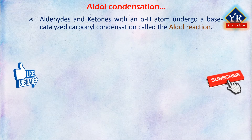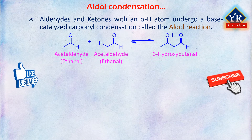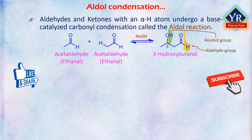Thus, aldehydes and ketones with an alpha hydrogen atom undergo a base-catalyzed carbonyl condensation reaction called the aldol reaction. For example, treatment of acetaldehyde (that is, ethanal) with a base such as sodium ethoxide or sodium hydroxide in a protic solvent leads to rapid and reversible formation of 3-hydroxybutanal, known as aldol — that is, aldehyde plus alcohol — hence the general name of the reaction. The so-formed 3-hydroxybutanal is a beta-hydroxyaldehyde.